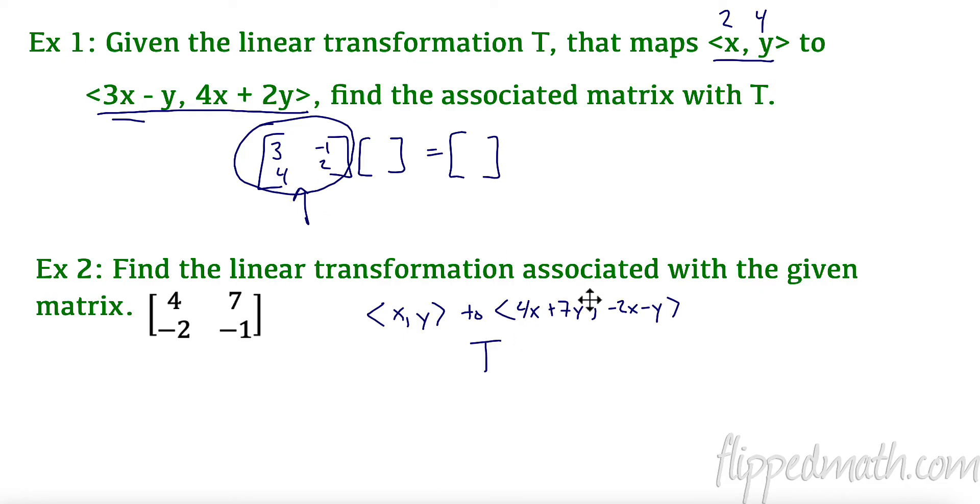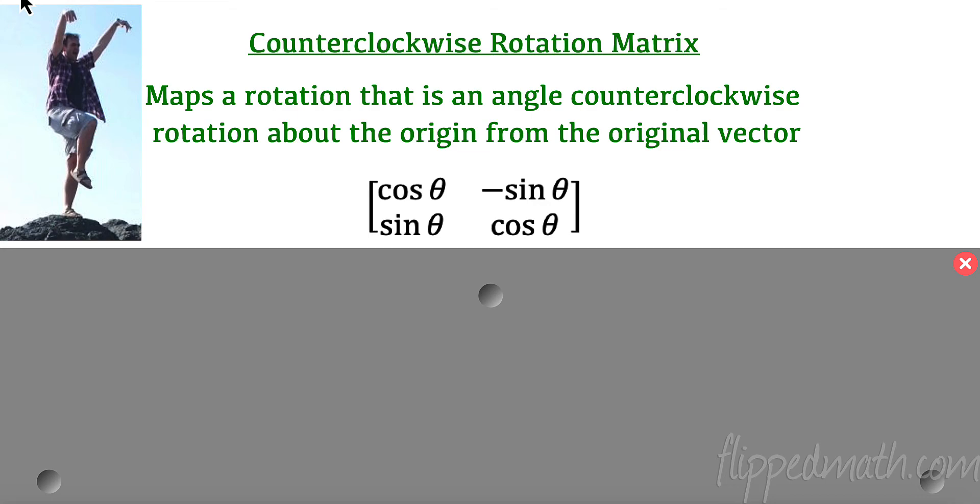Right now, I'm feeling like, you know, that's a little bit out there. So let's take a look at a specific transformation. Here is a specific transformation. In fact, this is the matrix that will map a rotation that is the angle counterclockwise rotation about the origin from the original vector. So counterclockwise.